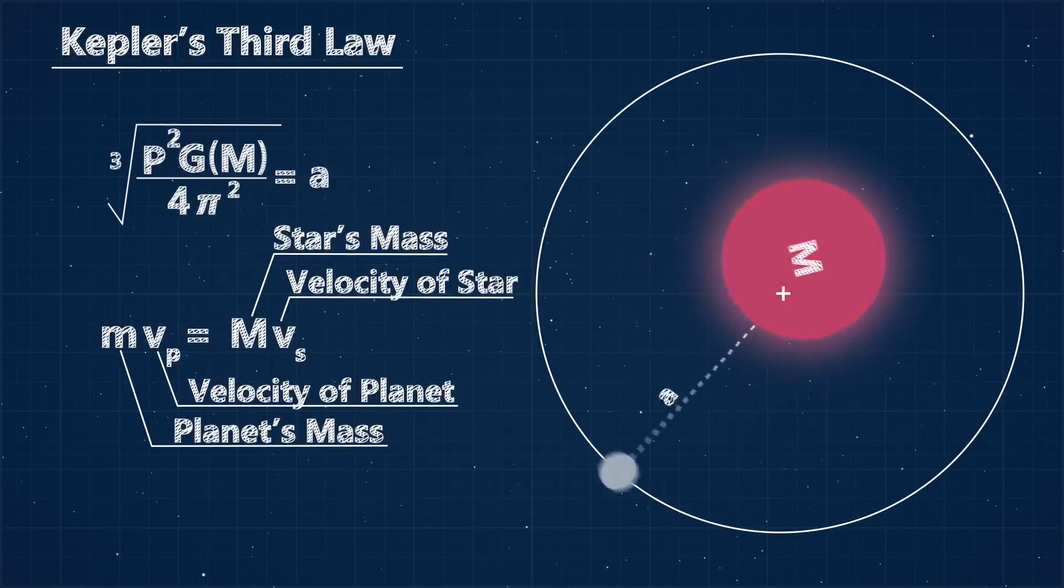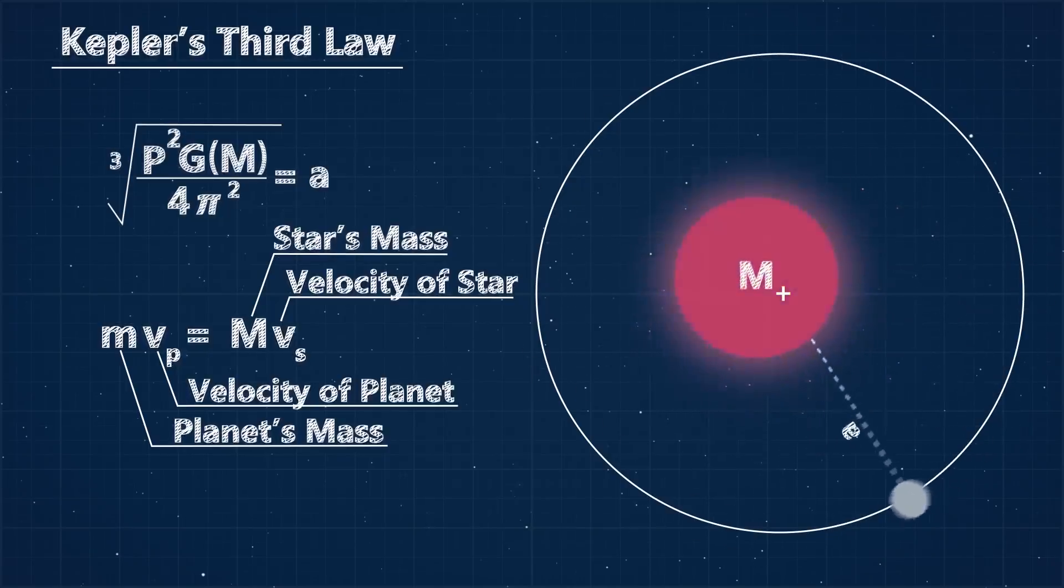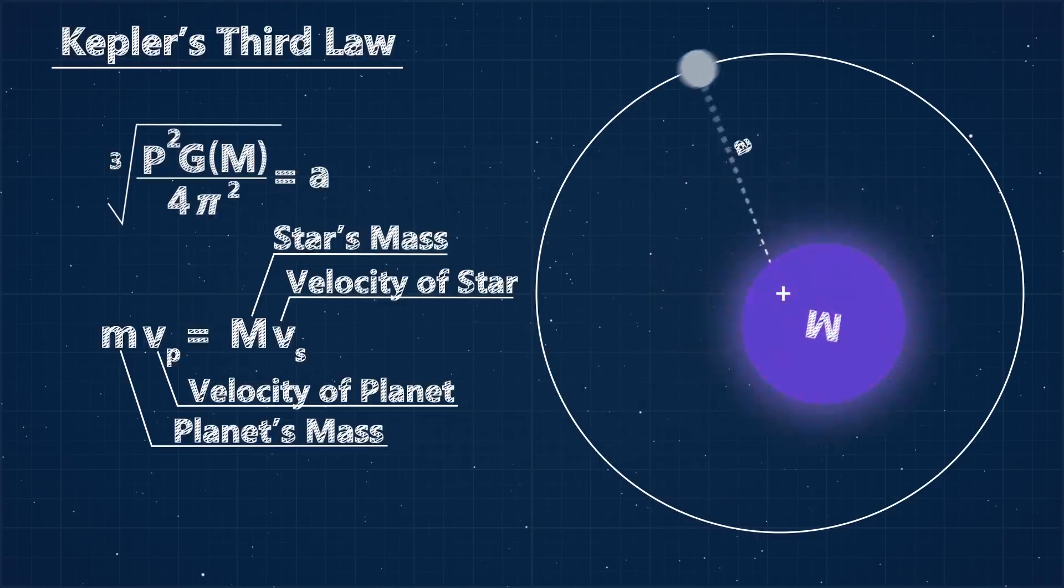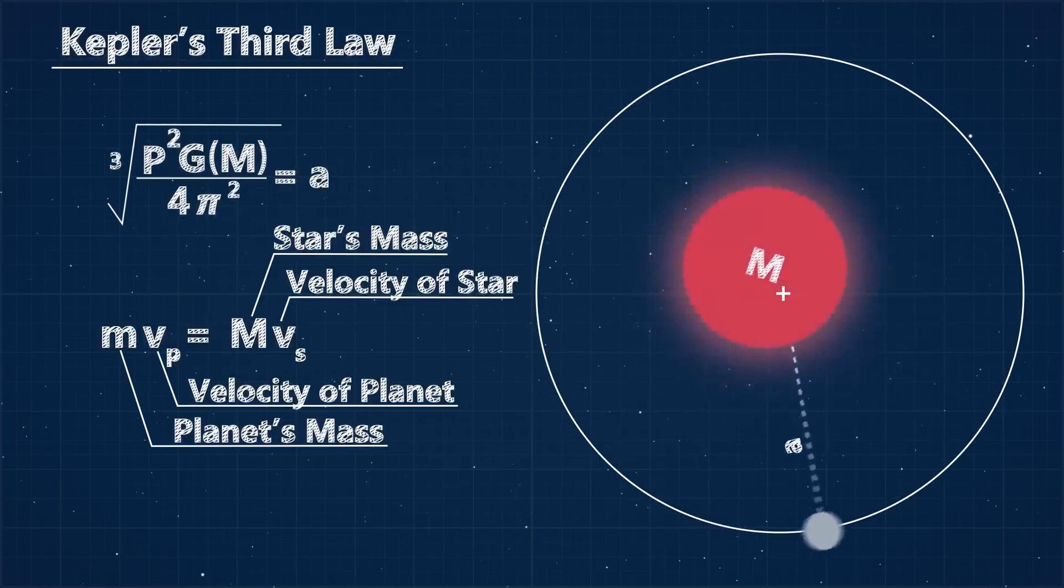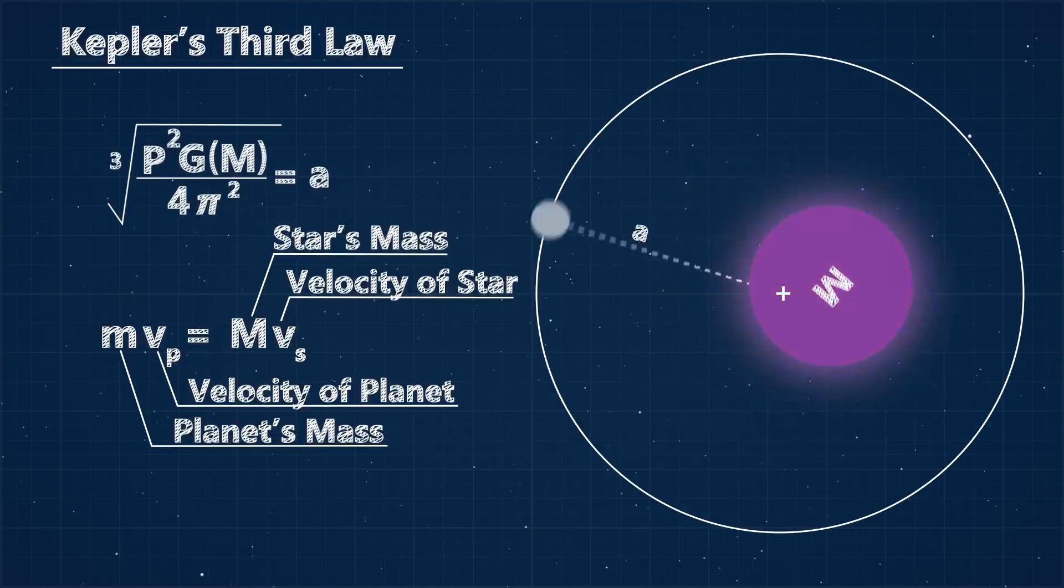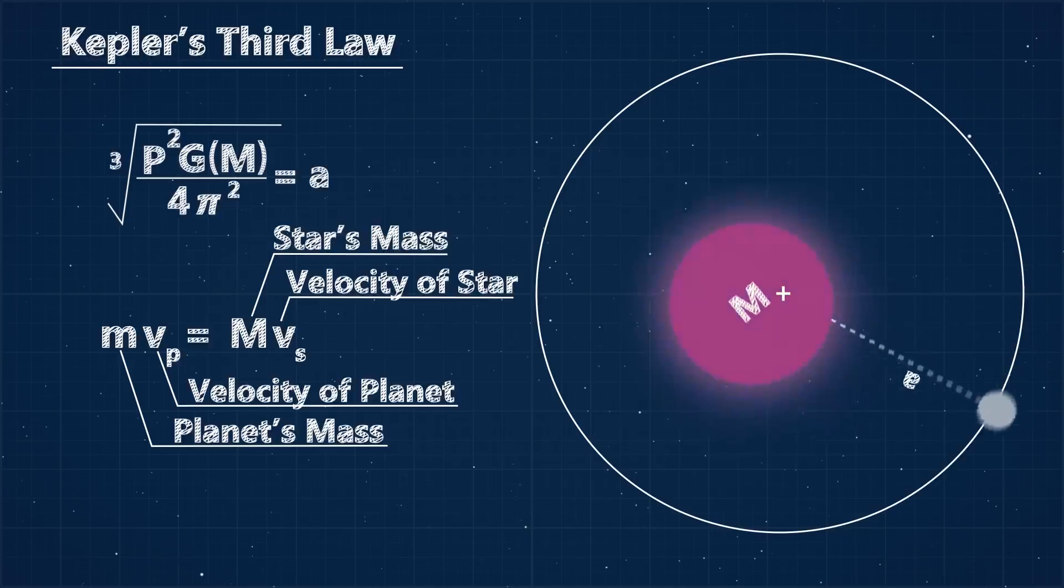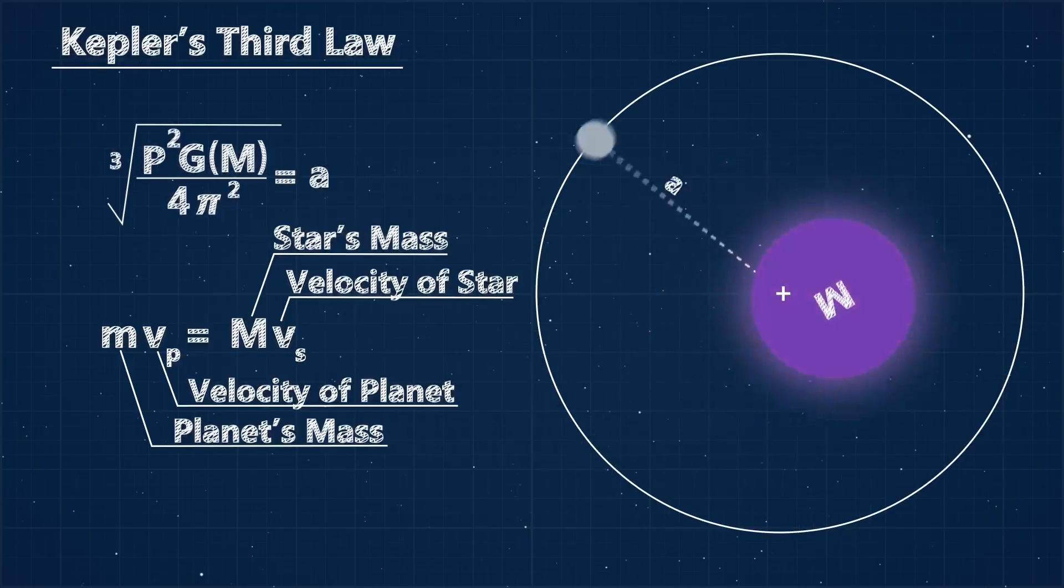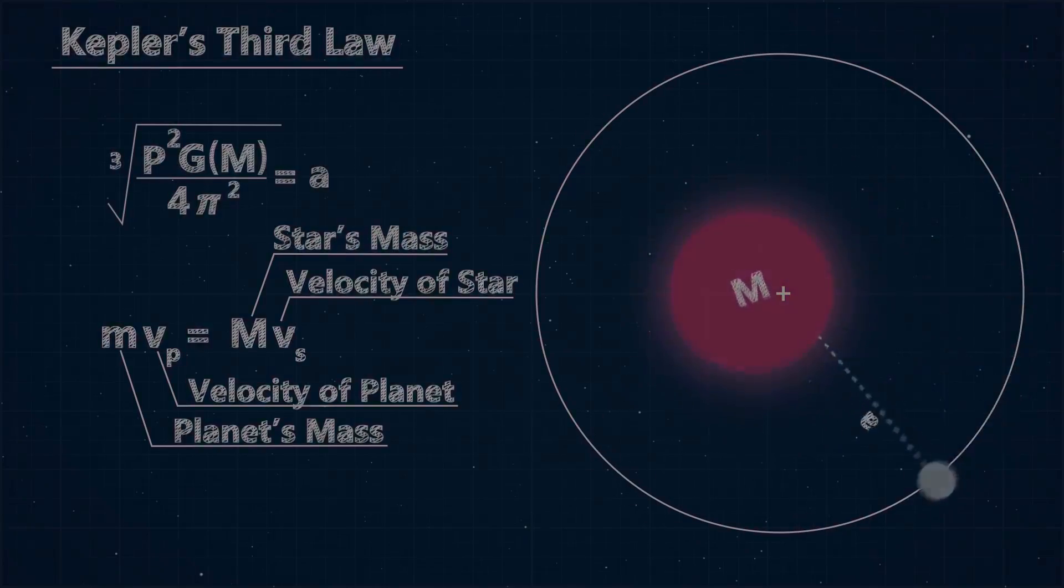Using the law of conservation of momentum, we can easily calculate the mass of the planet. We know the velocity of the planet from the orbital radius and period measurements. The mass of the star from our distance and luminosity measurements, and the velocity of the sun is measured from these Doppler shifts in the light frequency, leaving us with all the information we need to calculate the mass of the planet.